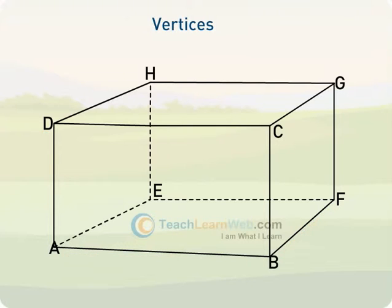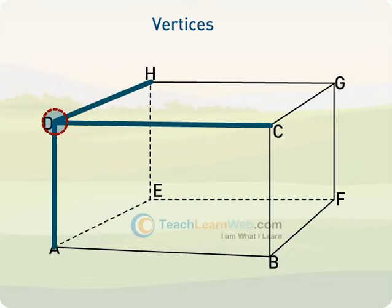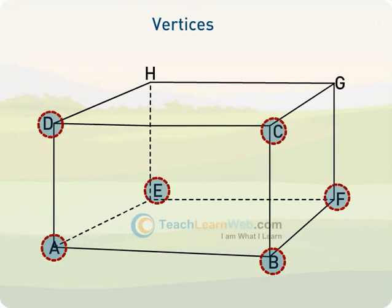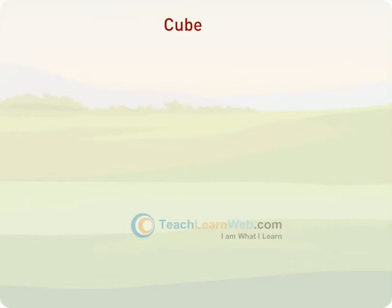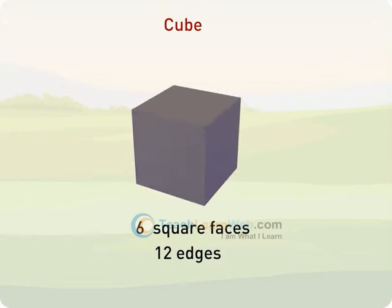The cuboid has eight vertices — a point where three edges meet — namely A, B, C, D, E, F, G, and H. A cube can be termed as a cuboid where the length, breadth, and height are equal. A cube has six square faces, 12 edges, and eight vertices.